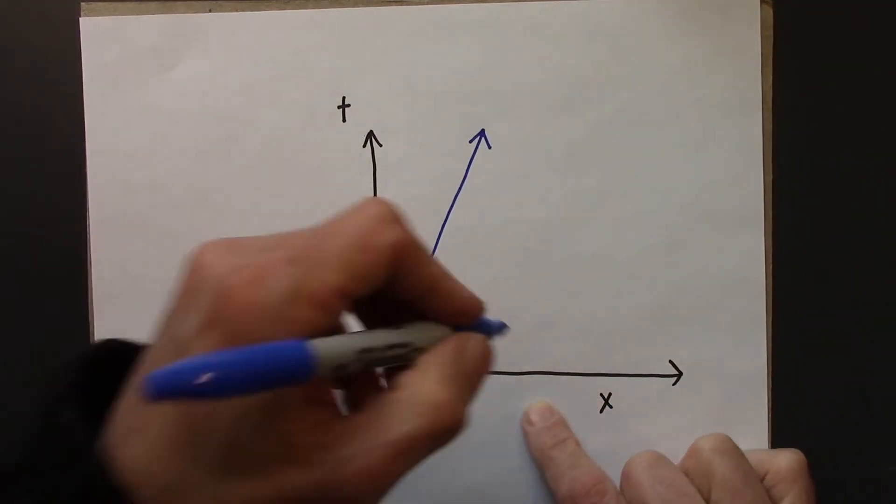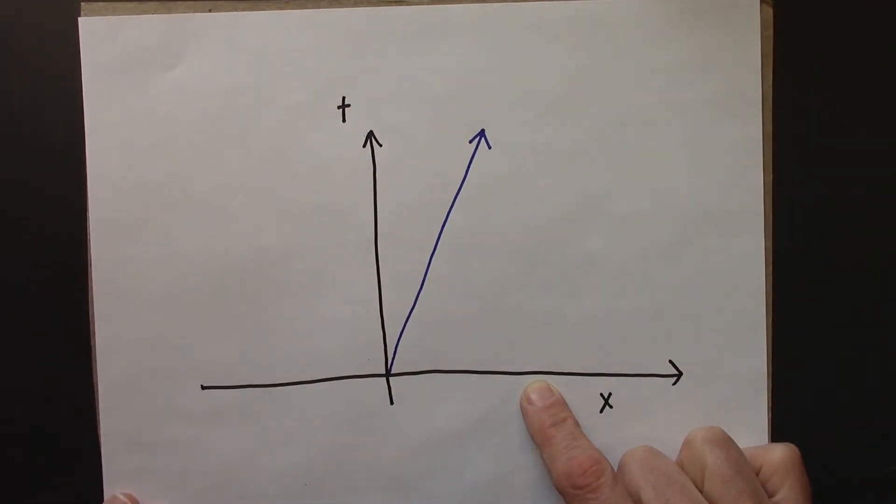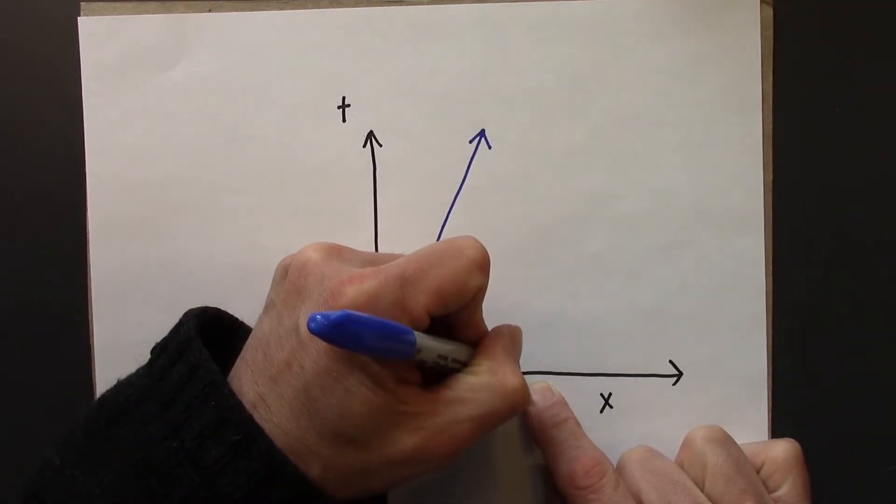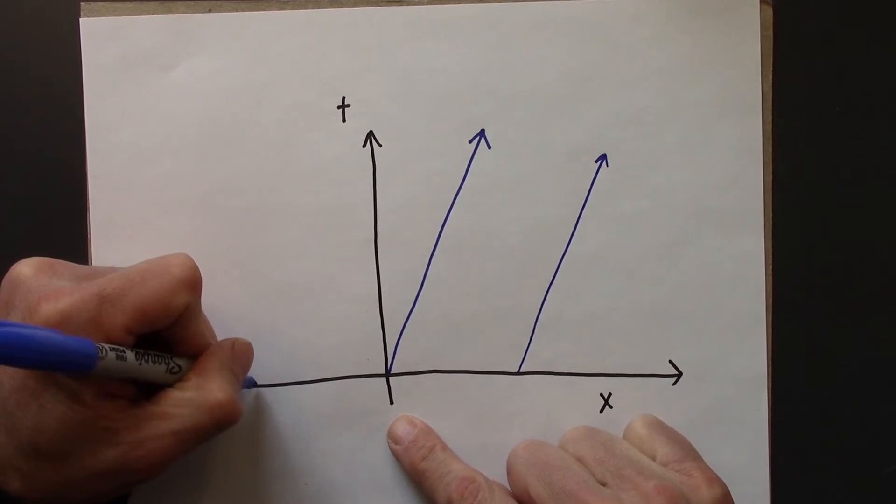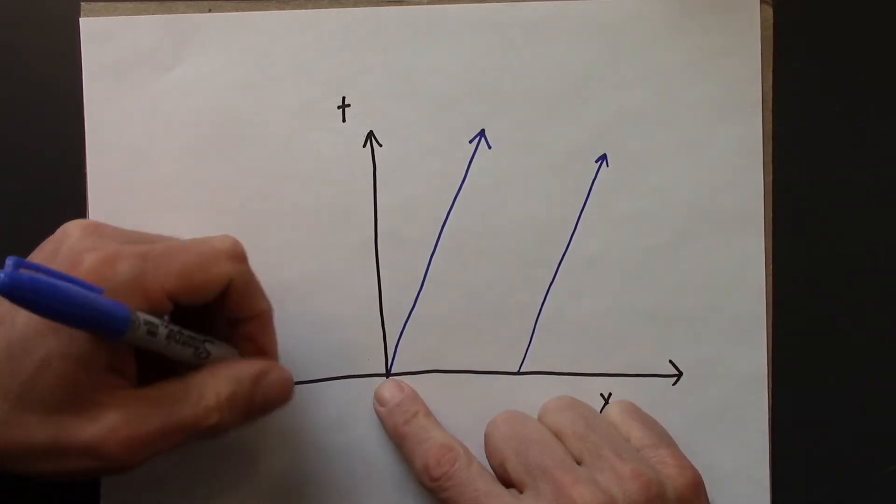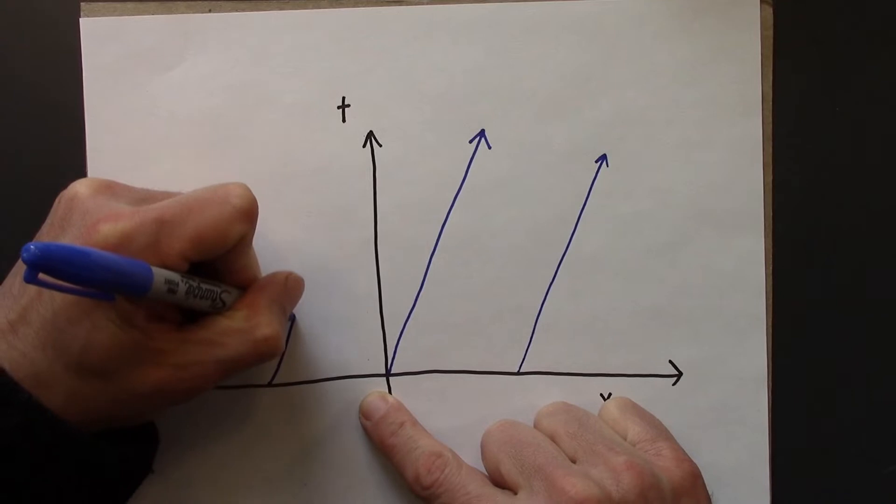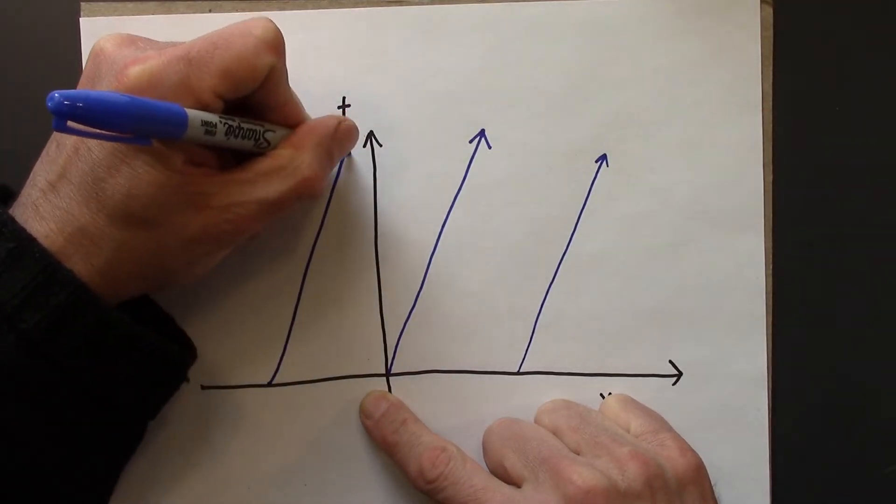And then the right clock is moving right along with Beowulf, and so it's also moving to the right. And the left clock, these are all moving together, is also moving to the right.